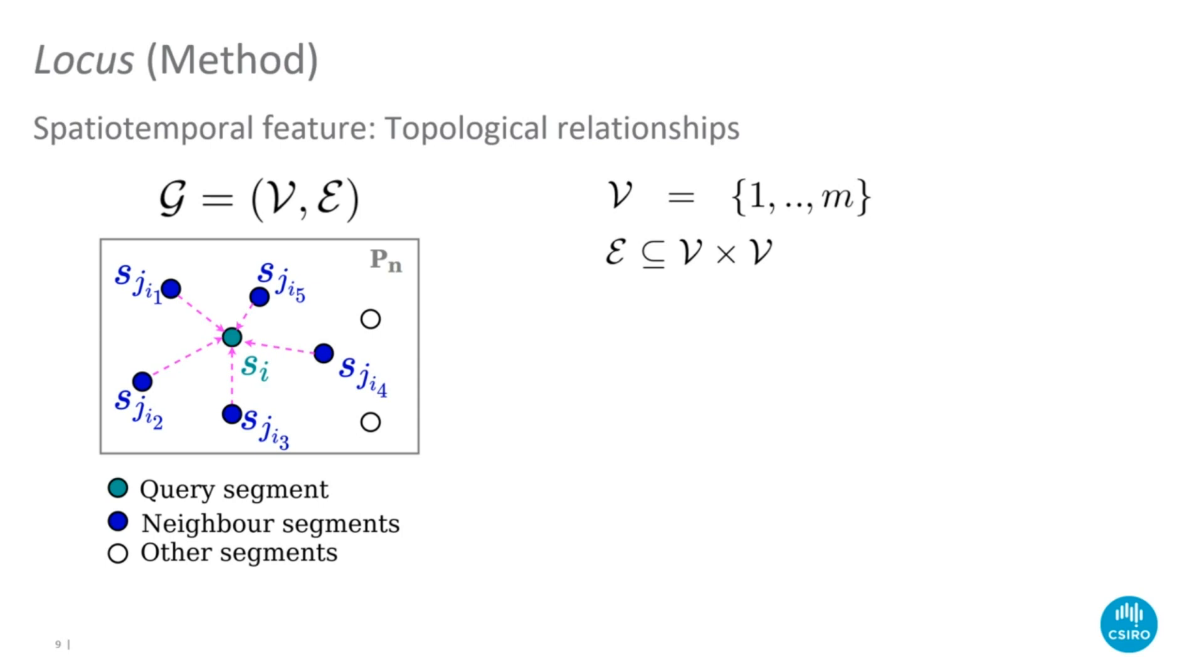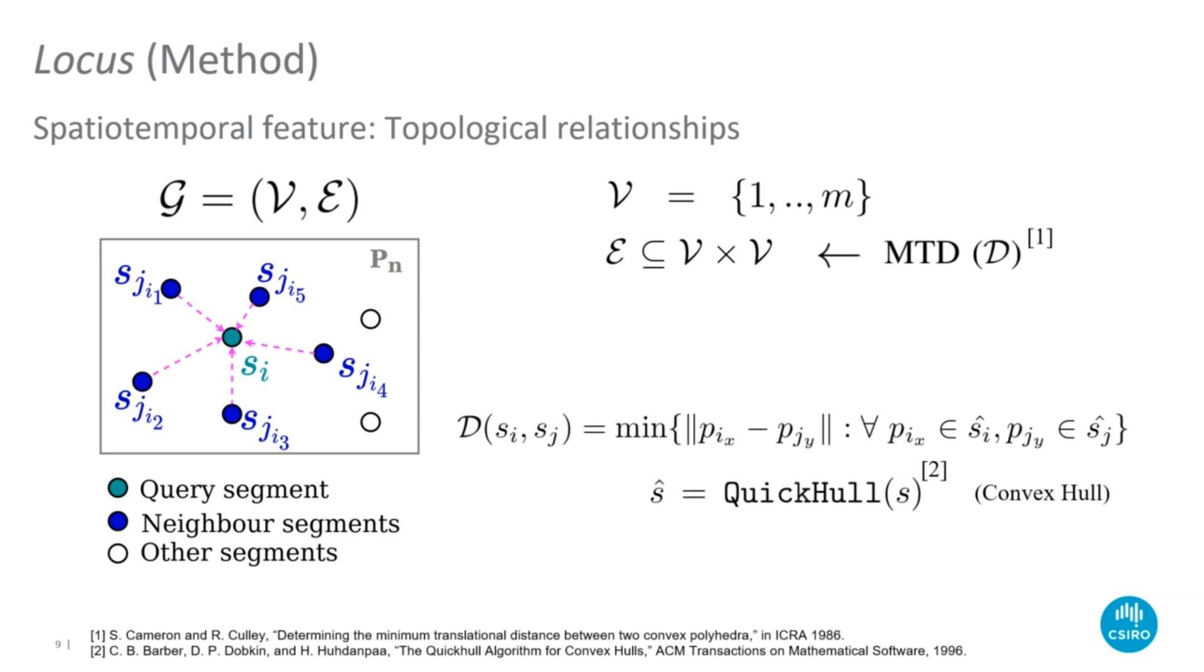Topological relationships of segments within a frame are defined using a directed graph, which represents each segment as a vertex. The edges of this graph represent the relationships between segments. This graph is constructed as a KNN graph where the segment neighbors are found by computing the minimum translational distance between the convex hulls of segments. We use the quick-hull algorithm for computing convex hulls.